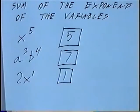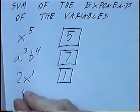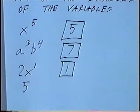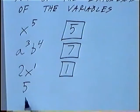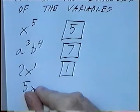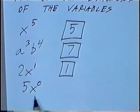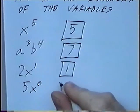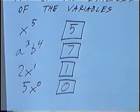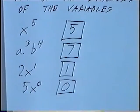The last question for the section is the number five — just a constant with no variables. Since there are no variables, we could write it as five times x to the zero power, which represents that there are no x's. So the degree would be zero. If you have a single number, like five, the degree will always be zero.